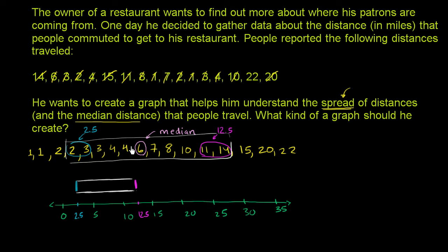And we'd want to show where the actual median is. And that was actually one of the things that we wanted to be able to think about in our original problem, when the owner of the restaurant wanted to think about how far people are traveling from. So the median is 6. So we can plot it right over here. So this right over here is 6.